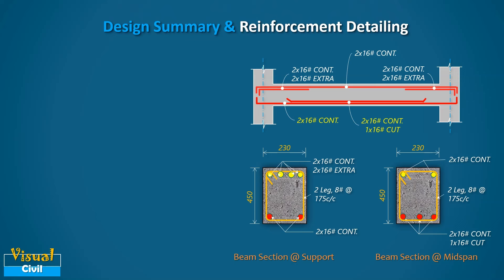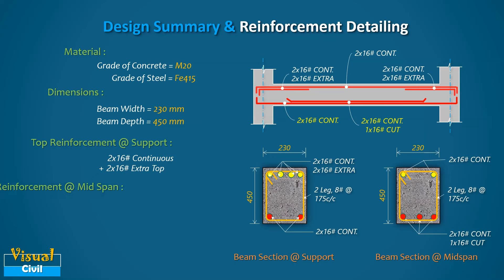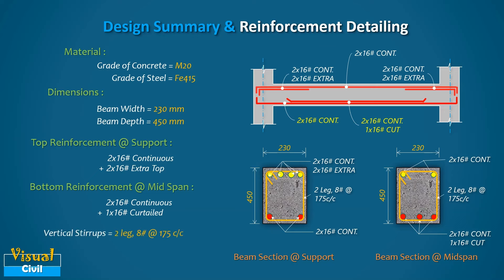Finally, let us summarize the design and reinforcement detailing. An RCC beam with the specified moment and shear force is designed using M20 grade concrete and Fe415 steel. The beam section dimensions are 230 mm × 450 mm. The top is reinforced with two 16 mm dia continuous bars plus two additional 16 mm dia bars at the supports only. At the bottom, two 16 mm dia continuous bars and one 16 mm dia curtail bar are placed. For shear resistance, two-legged 8 mm dia vertical stirrups are placed at a spacing of 175 mm center to center.